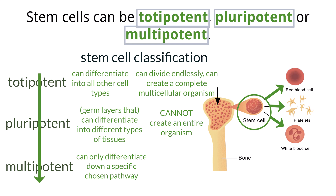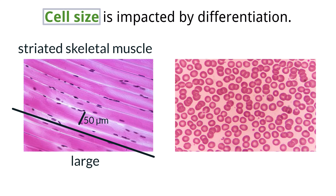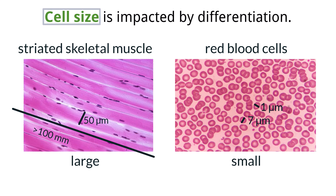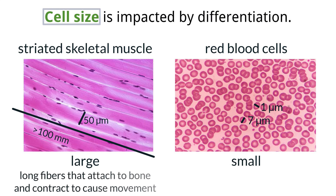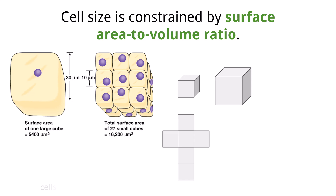As we move from totipotent to multipotent stem cells, their ability to differentiate becomes more restricted, because the cells are taking steps to eventually become specialized. The process of stem cell differentiation impacts the final size of a cell, which will also integrate with its function. Some cells are larger, like striated muscle fibers with a diameter of around 50 micrometers and a length that can exceed 100 millimeters. And some are smaller, like red blood cells with a diameter of around 7 micrometers and a thickness of only 1 micrometer. The final shape and structure of these cells relate to their functions, with striated muscle fibers being long enough to connect to bones and contract to pull on them, and red blood cells being small enough to fit through capillaries and exchange nutrients. All of the cells originated from stem cells, and their differentiation led them to their final form.